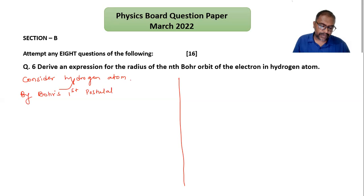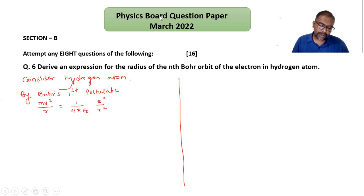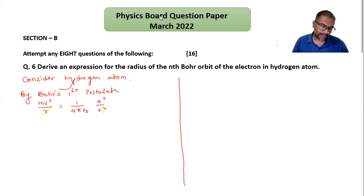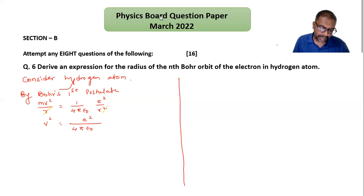This is the centripetal force equation — Bohr's first postulate. By using this force postulate, one r from r square gets cancelled, and m can be shifted to the other side. So we can write the formula for v square: v² = e² divided by 4π ε₀ m r. This is equation number one.